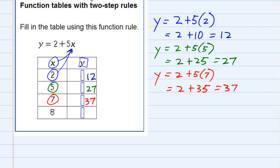And then doing the last one, x equals 8, that would give me y equals 2 plus 5 times 8, which is 2 plus 40, which gives me a 42. So, we plugged in each one of those x values to see what would come out as a y value.